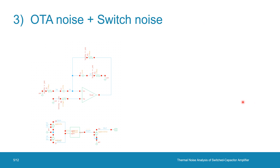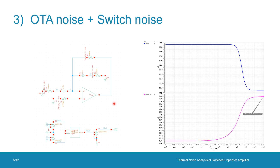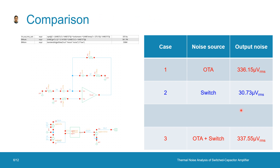Case number three: yes for the OTA noise and yes for all switch noise sources. The total output noise voltage is 337.55 µV rms. Summarizing the three cases: 336 µV for OTA only, 30.7 µV for switch only, and 337 µV for both. As expected, the switch noise is pretty much negligible. The total output noise power as the summation of the two matches quite well with the manual combination using the superposition principle.